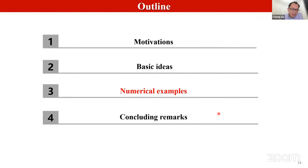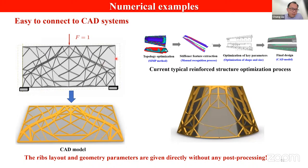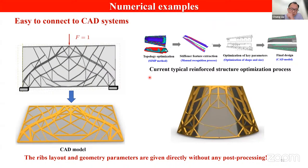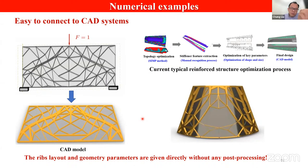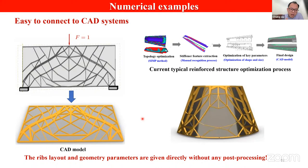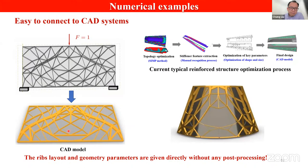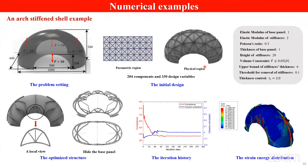In this section, we use several numerical examples to demonstrate the effectiveness of the method. The first example is a flat plate rib-reinforced structure. Our method directly uses the explicit geometry parameters of the ribbon components as design variables and the optimization result can easily be connected to a CAD system.